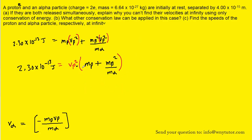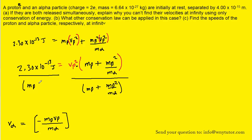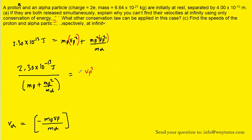Since we have multiplication by that large term in parentheses, we divide both sides of the equation by it, which cancels it on the right-hand side, leaving Vp squared. Finally, we take the square root of both sides, which gives us Vp — the velocity of the proton.